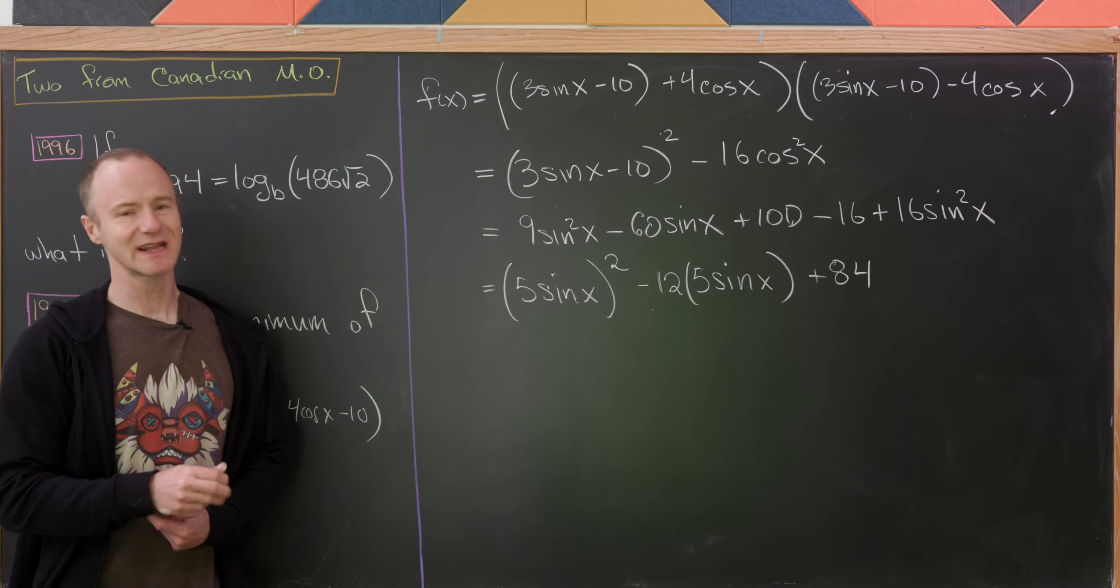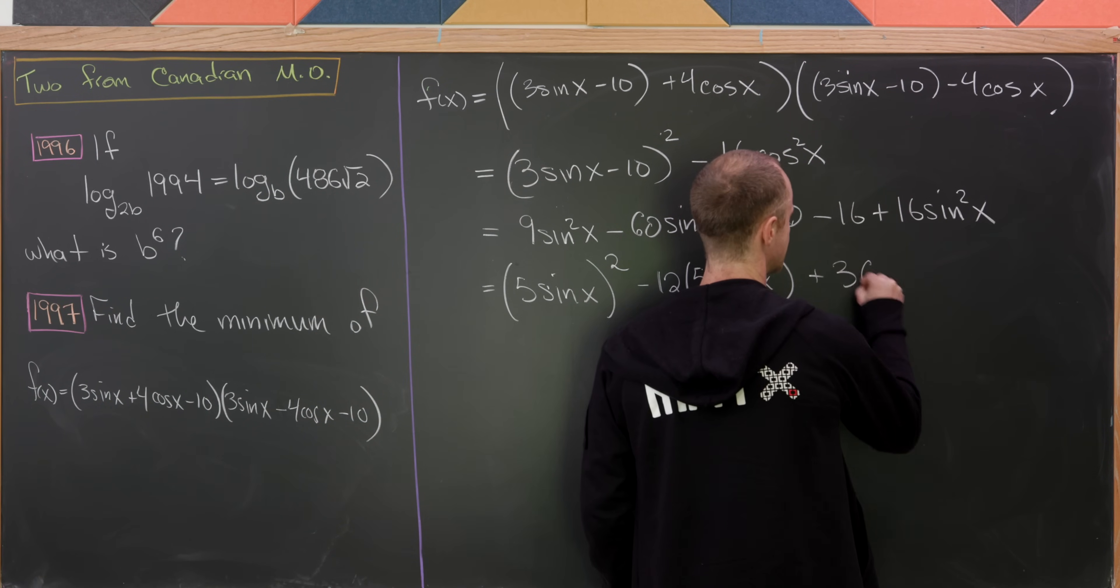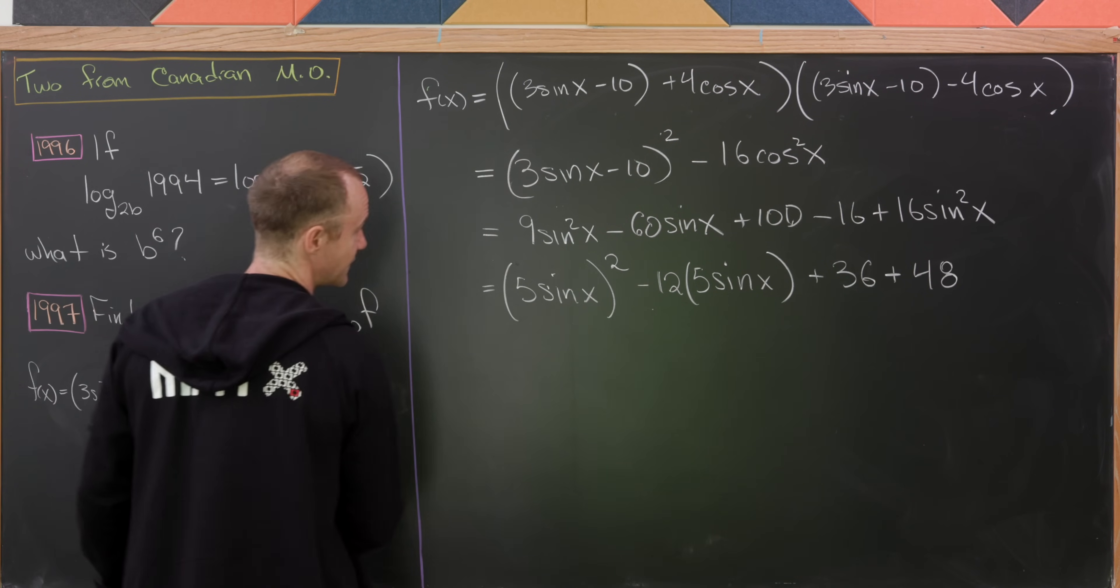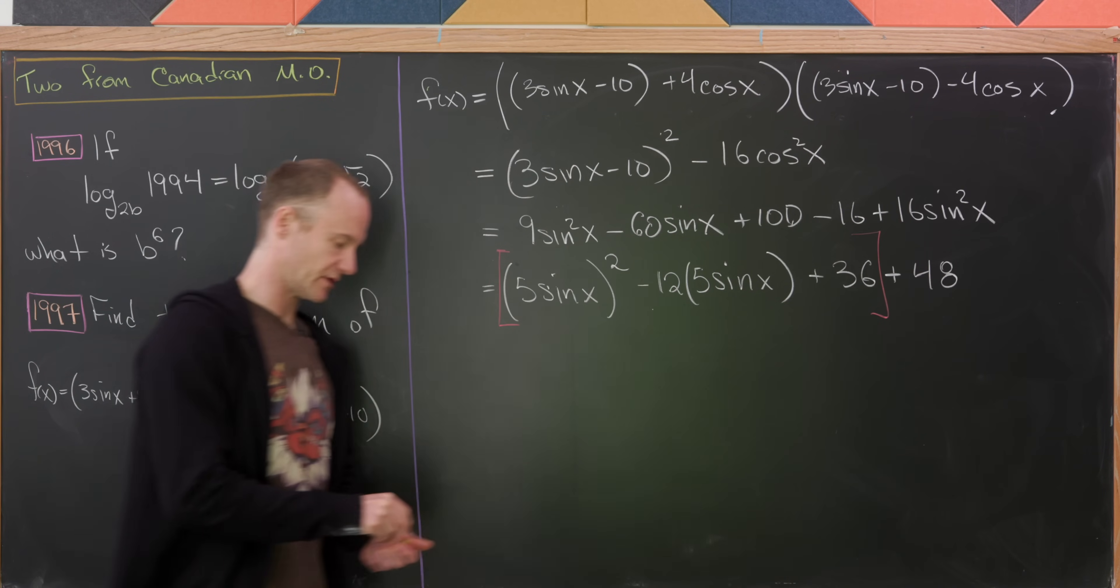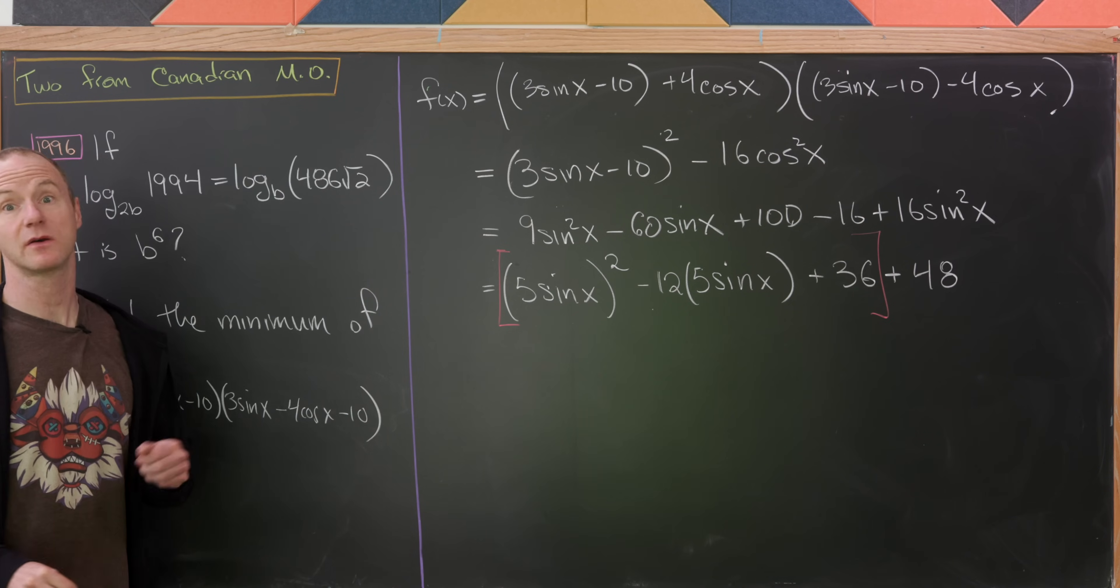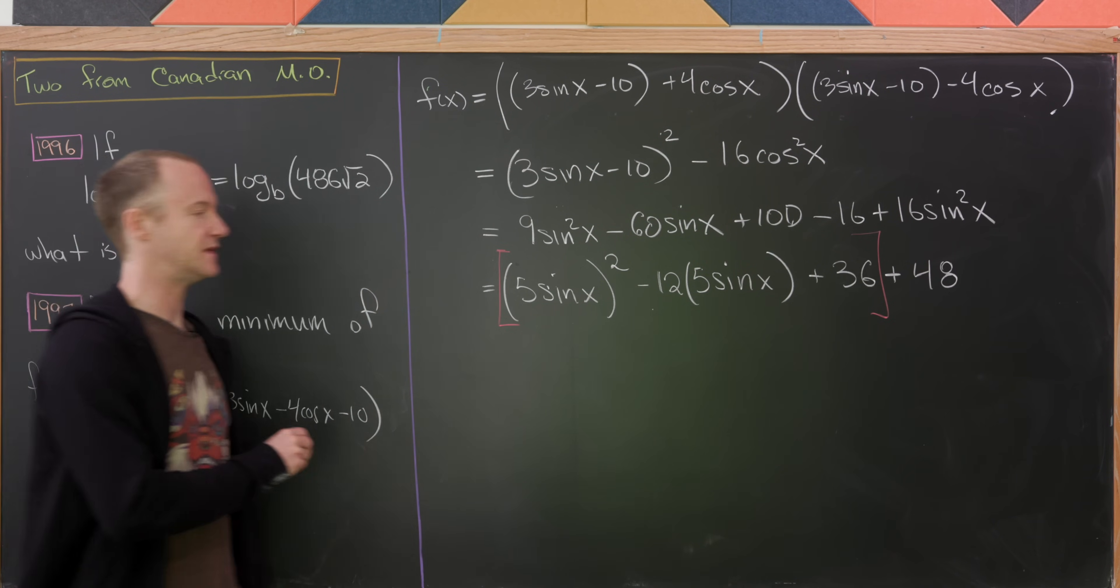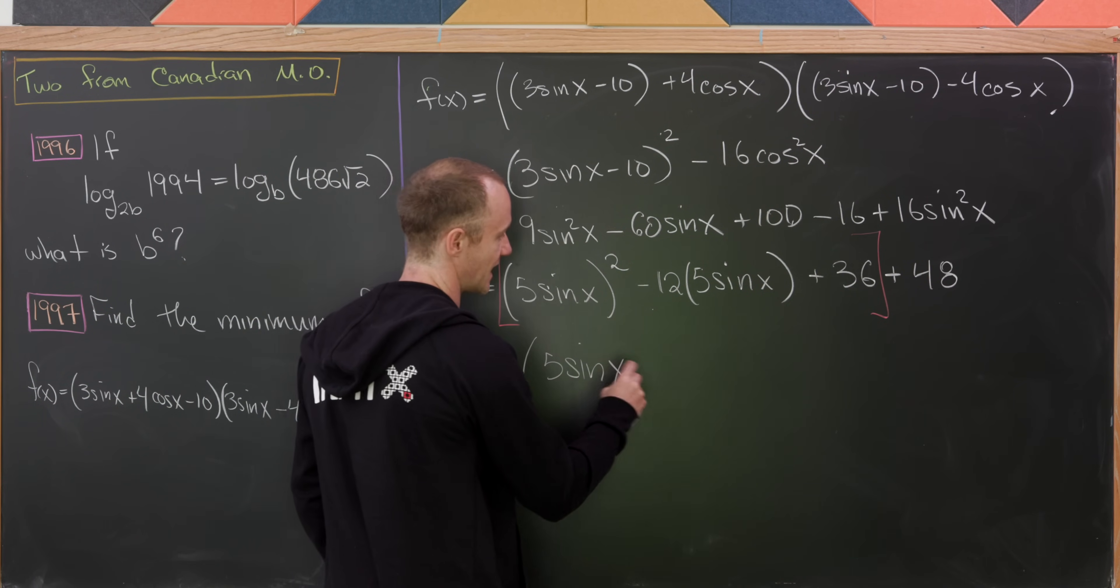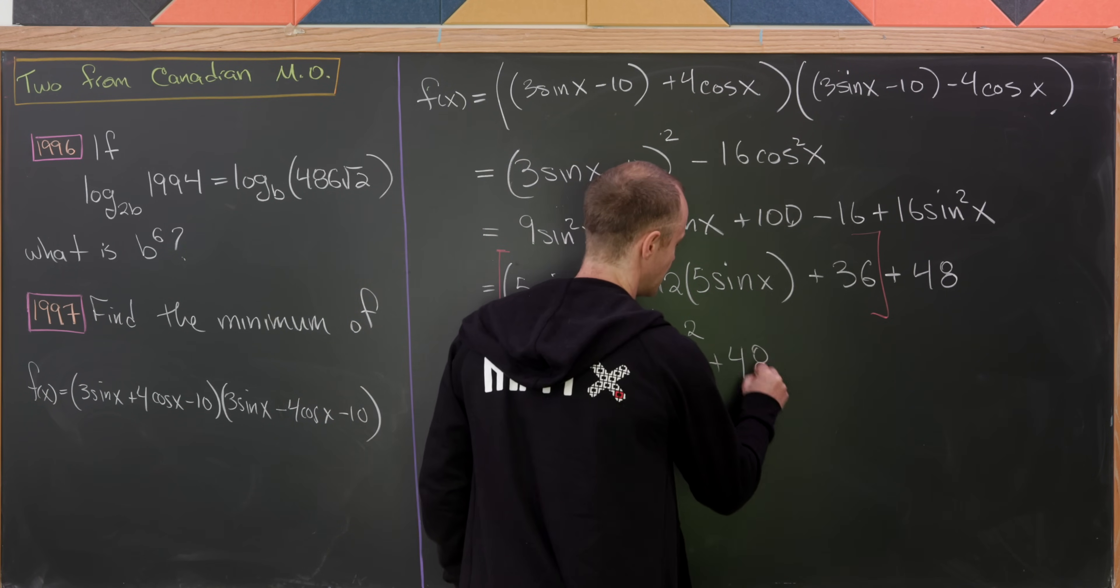But now I'm actually going to take that 84 and split it into two pieces. I want to split it into 36 plus 48. And I'd like to do that because if you look at the first three terms here, now that's a perfect square binomial. Now, of course, you could look at this after the fact and think, oh, I need to complete the square or maybe completing the square would be useful. But we might as well just do it all at once. Now factoring, what will we get? We're going to have 5 times sine of x minus 6 quantity squared plus 48.